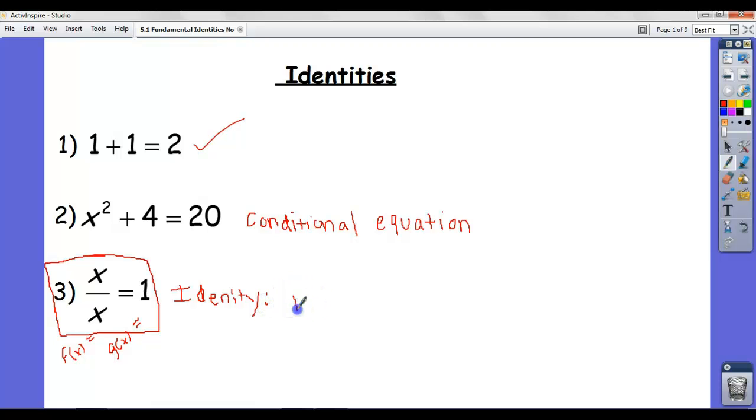So we'll just say it's a true statement for all values in the domain of both. One thing you're going to want to keep in mind is that means that every time I see a 1, I can put in x over x and vice versa. So identities are what we're going to focus on this unit.